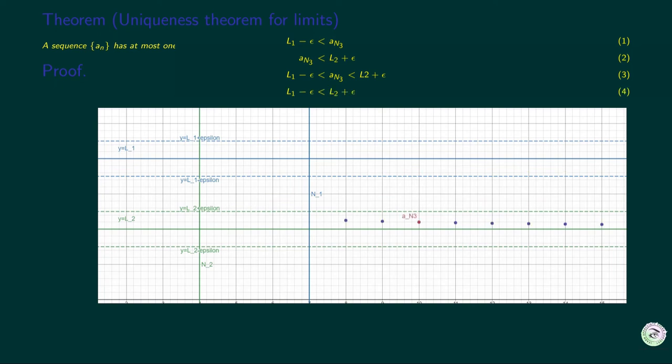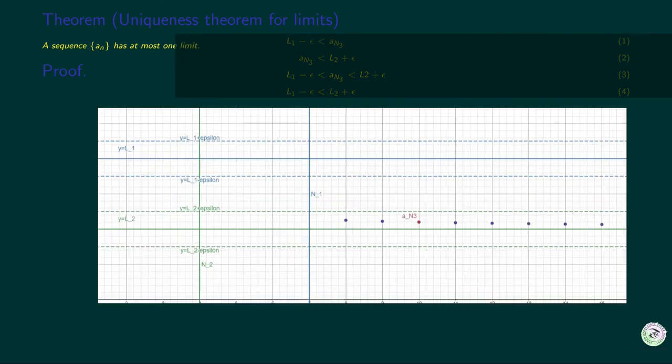In 3 we conclude that l2 plus epsilon is greater than l1 minus epsilon. According to the picture, if we select small enough epsilon that prohibits the overlapping tubes, then we get the reverse inequality. This should lead to the contradiction.